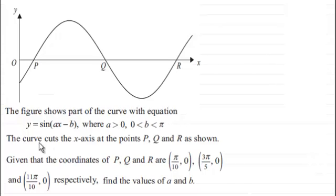We're told that the curve cuts the x-axis at the points P, Q, and R. And we're given that the coordinates of P, Q, and R are pi over ten zero, three pi over five zero, and eleven pi over ten zero respectively. And what we've got to do is find the values of those constants a and b.